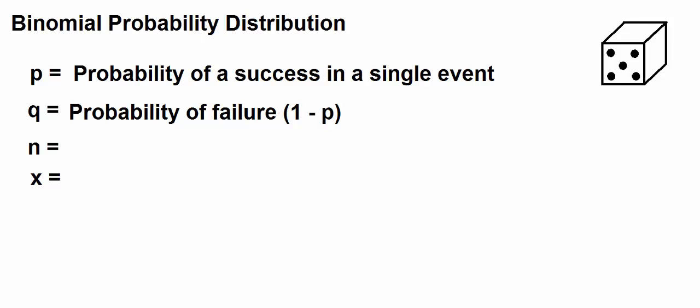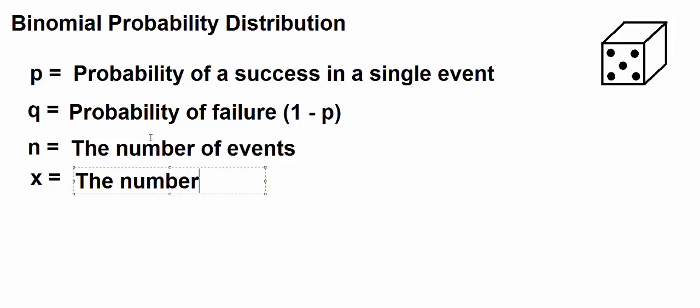P is the probability of success in a single event. With a binomial probability distribution, we're actually interested in repetitive events. So, N is always the number of events. And then X is the number of successes. P is the probability of a success, N is the number of events, and X is the number of successes.